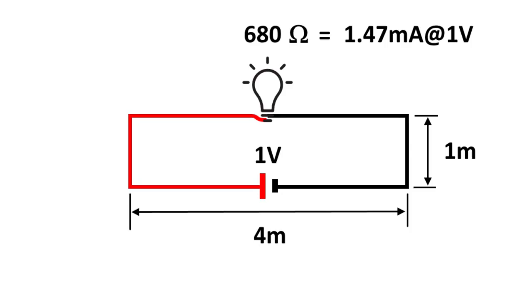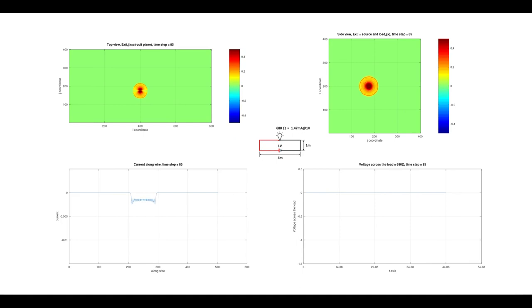However, if we choose a load resistance matching the characteristic impedance of the wire, then when the wire current first hits the light bulb, the full voltage is established. In this simulation with a load of 680 ohms, we see the full voltage established when the wire current first hits the load.